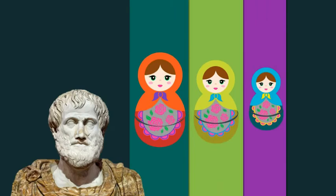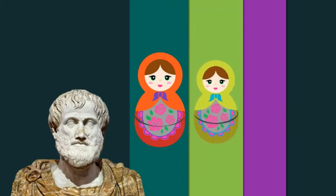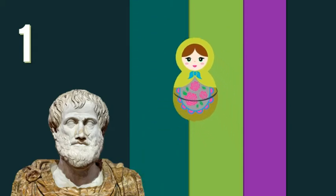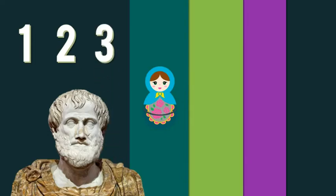Say I tell you that the blue doll is inside the green doll — we'll call that statement number one. Then I tell you that the green doll is inside the red doll — statement number two. Using statements one and two, you can conclude that the blue doll is inside the red doll, even though I never actually said that it was. That, my friends, is logic.